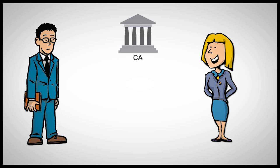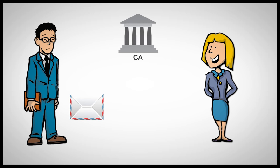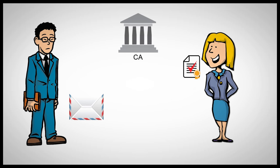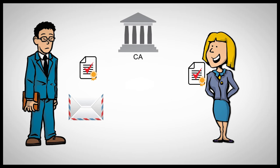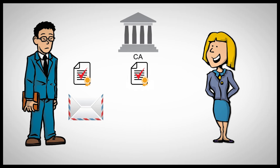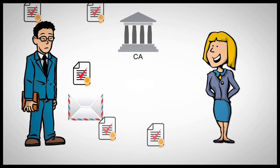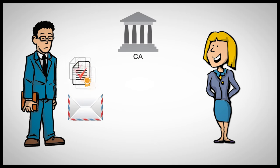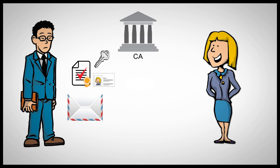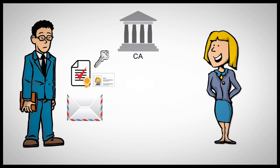Bob wants to send a secret message to Mary. Mary has already obtained a digital certificate from a CA that Bob trusts. Bob can now either get Mary's certificate from the CA, from Mary herself, or from anybody else who has Mary's certificate. Since the digital certificate can be independently verified, it doesn't really matter where Bob gets Mary's certificate from.